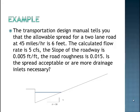The Transportation Design Manual tells you that the allowable spread for a two-lane roadway at 45 miles per hour is 6 feet. So 6 feet is the allowable top width. The calculated flow rate is 5 cubic feet per second. The slope of the roadway is 0.005 feet per foot. The roadway roughness is 0.015. The cross slope, which is 30 to 1. Is the spread within this roadway acceptable, or should more drainage inlets be done?